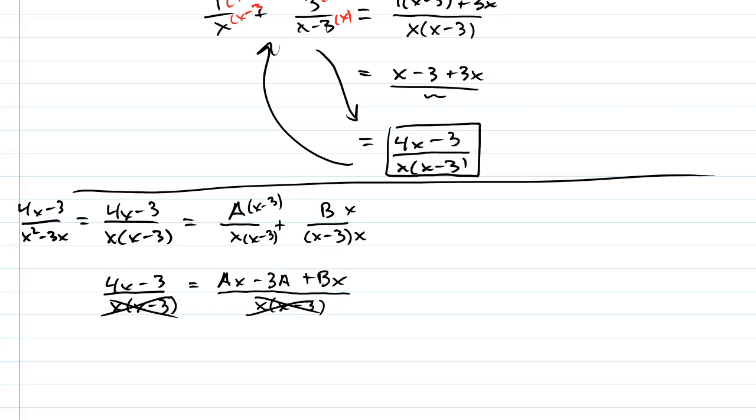Now, if you look at the top, though, Ax and Bx, if you combine them, should equal 4x. And so, we know that A plus B should be 4.